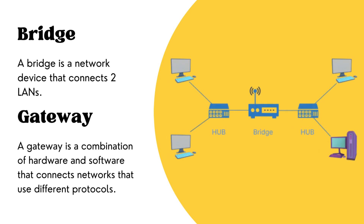Different LANs in a network can be linked to build a bigger LAN, and this kind of network aggregation is known as network bridging. A bridge links many LANs so that they appear to be a single network. A bridge links two or more separate LANs that use the same protocol and allows devices to communicate with one another.